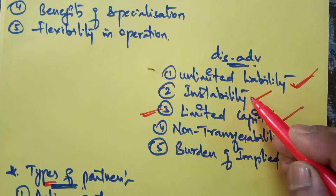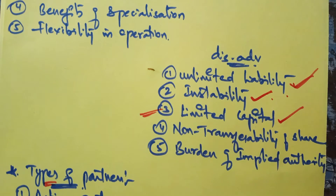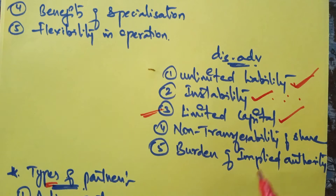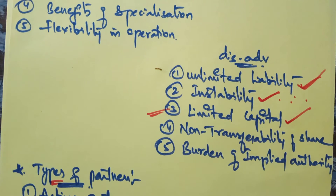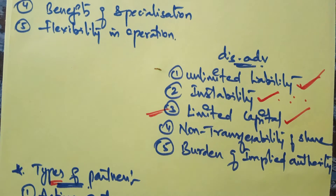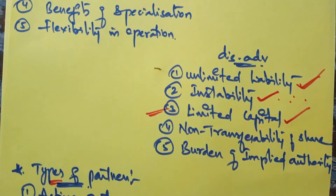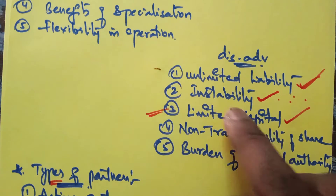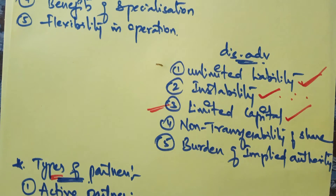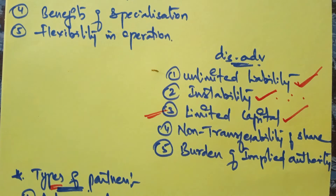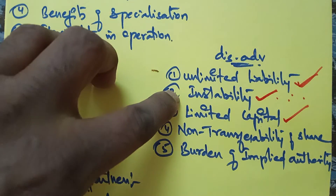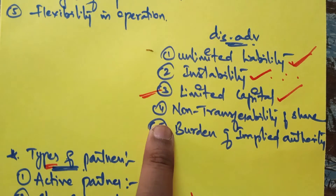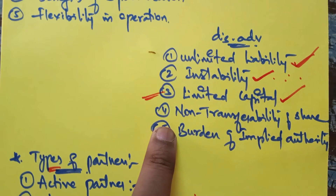The next disadvantage is instability. Partnership goes along with the partners — if something happens to a partner, it affects the existence of the firm. If a partner retires, dies, or the agreement is cancelled, events like death, insolvency, lunacy, or retirement of a partner will affect the existence of the business, and it may come to closure.